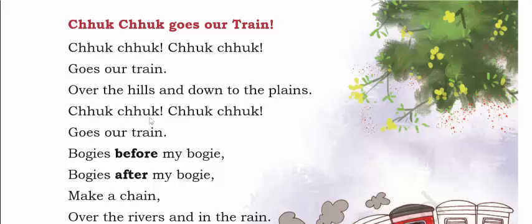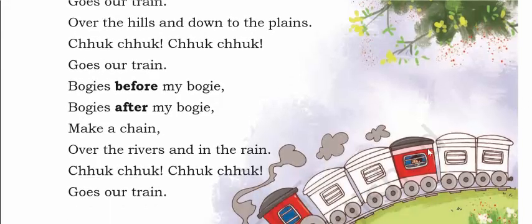There is green color at the bottom. There are also bogies before and after my bogie. The bogies coming before are in front of my bogie — these are called bogies before my bogie, and bogies behind are called after my bogie. Make a chain over the rivers and in the rain — chook chook chook chook goes our train.